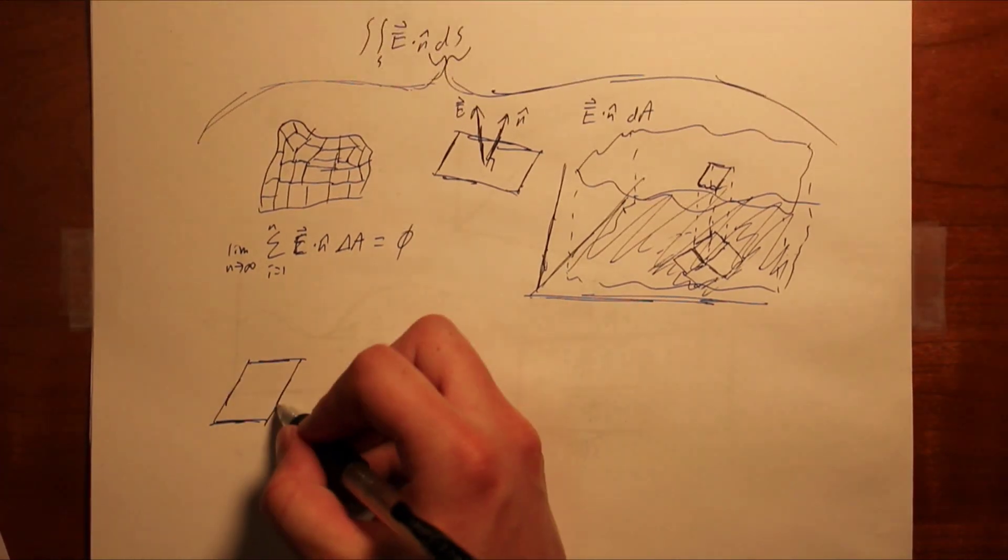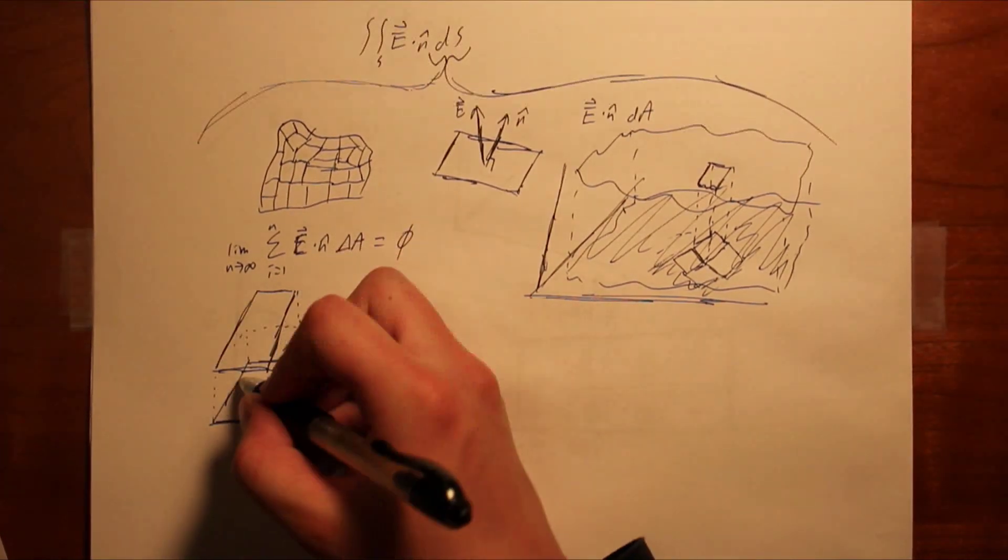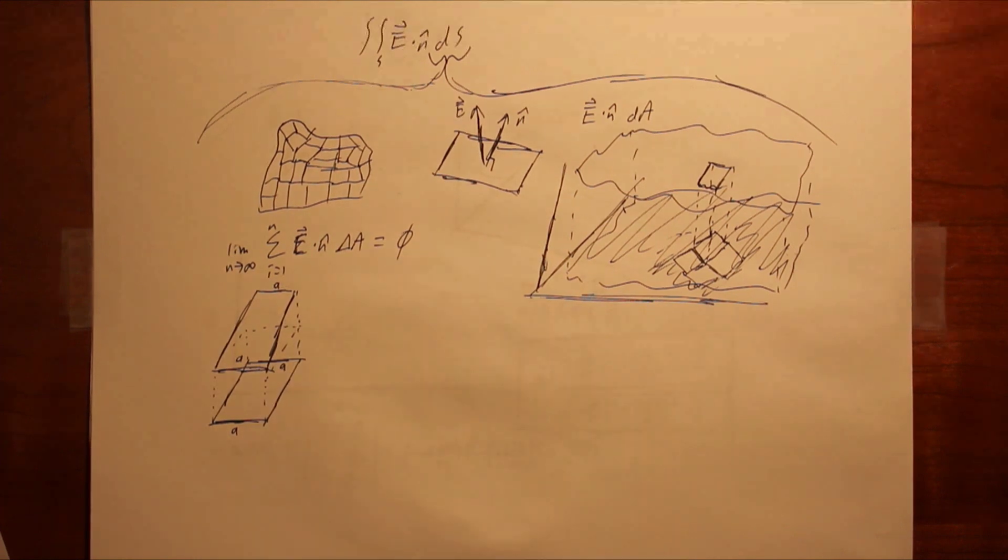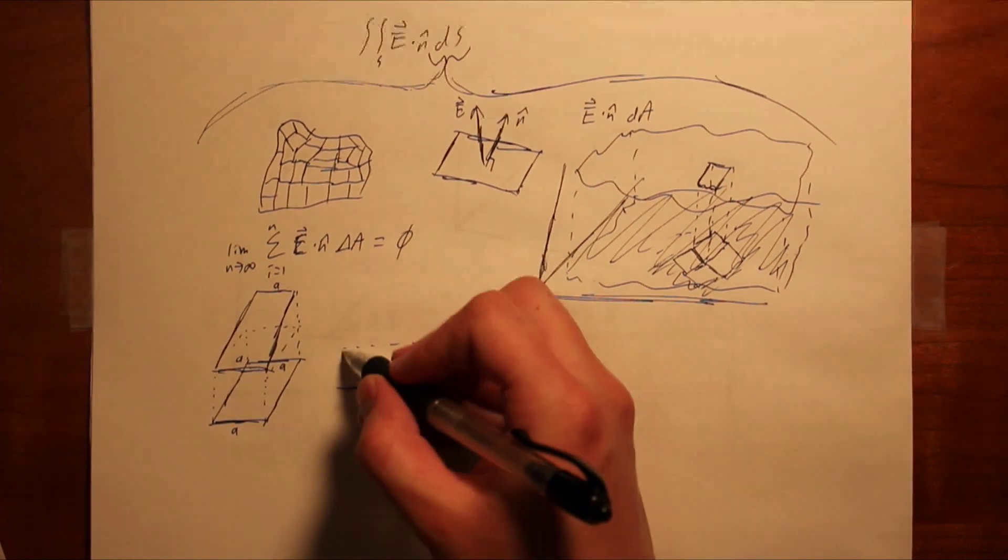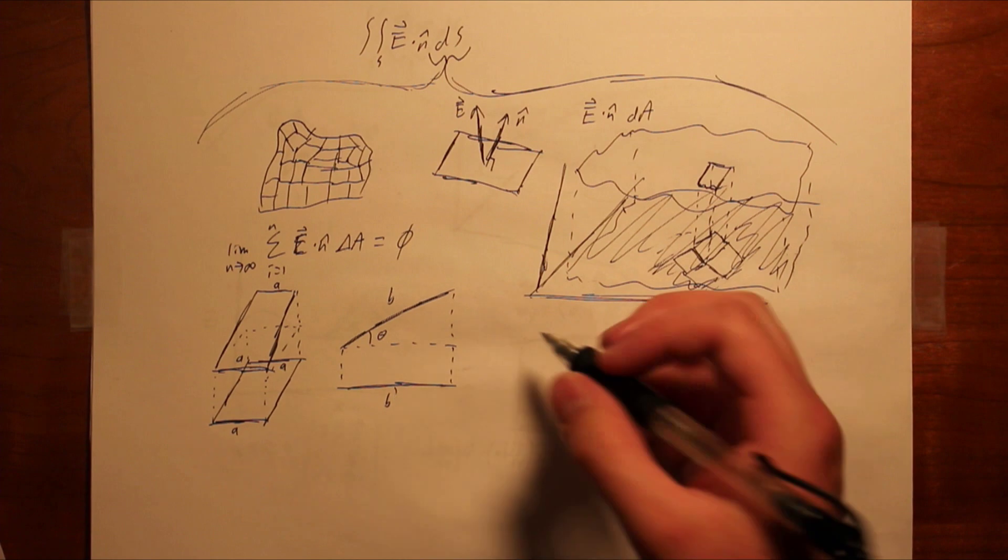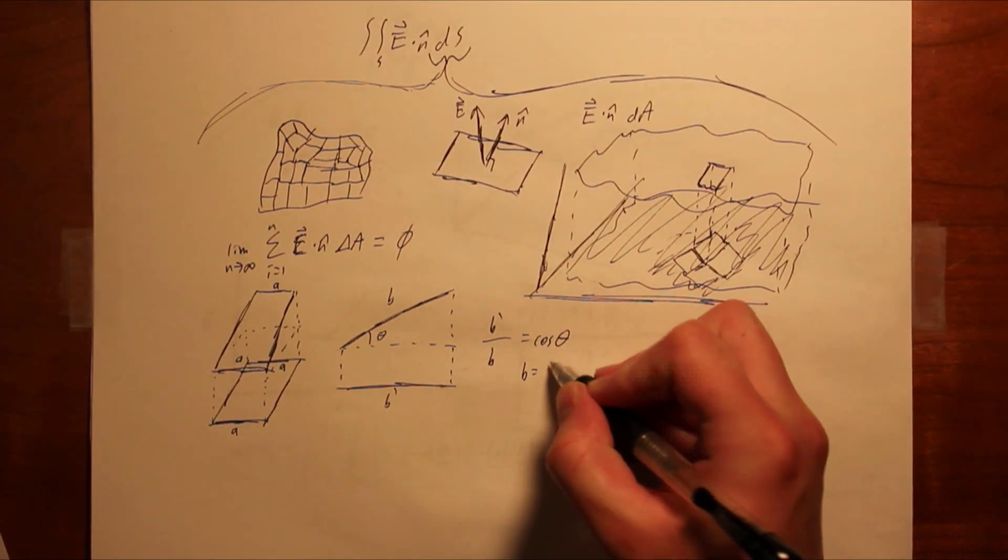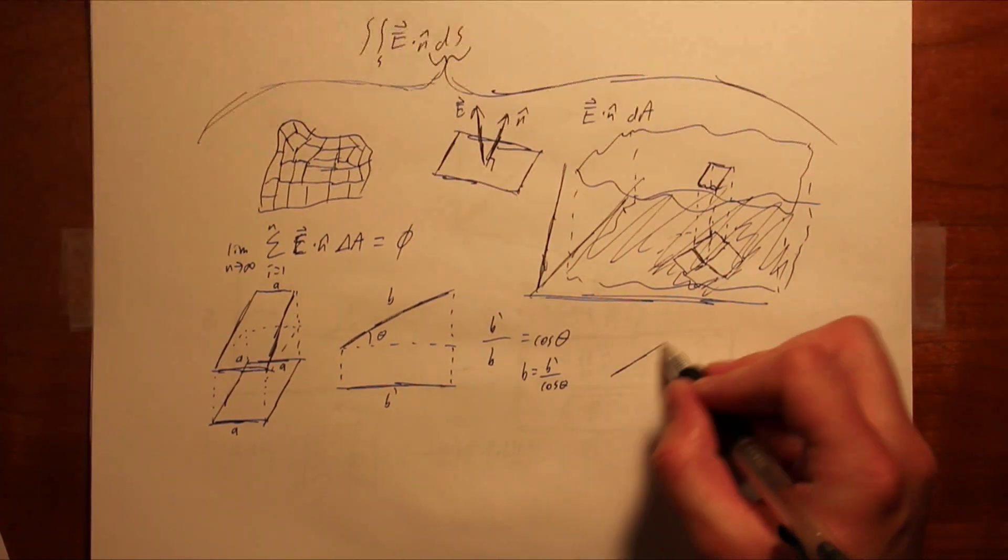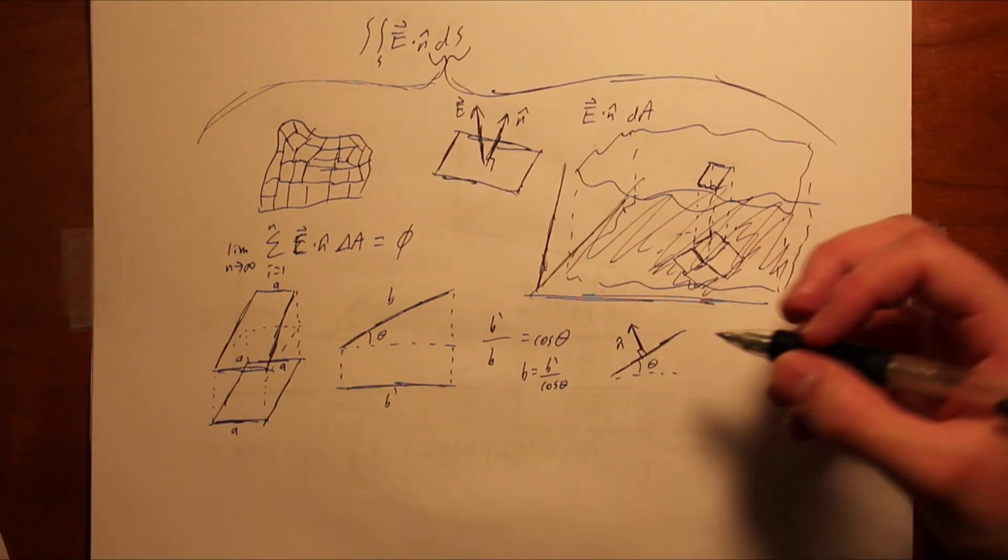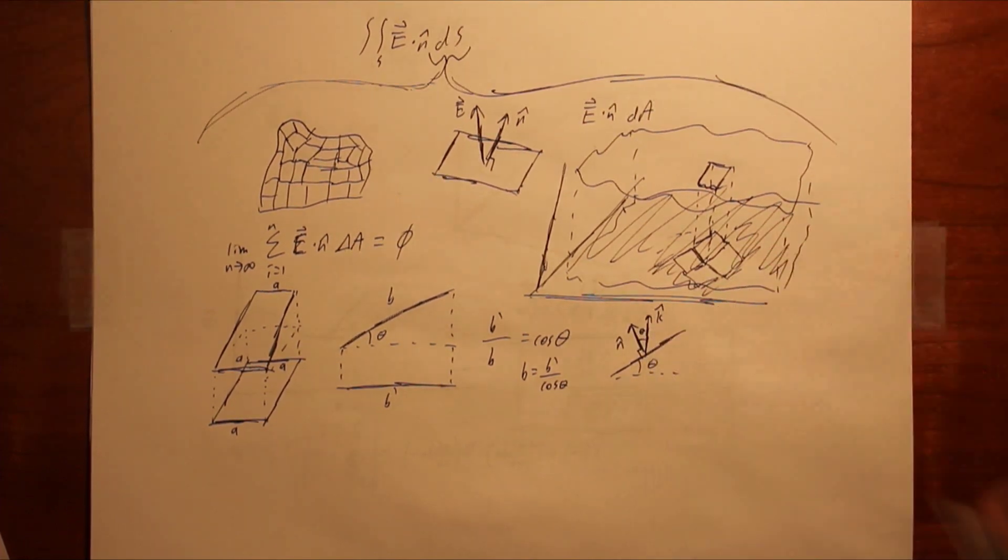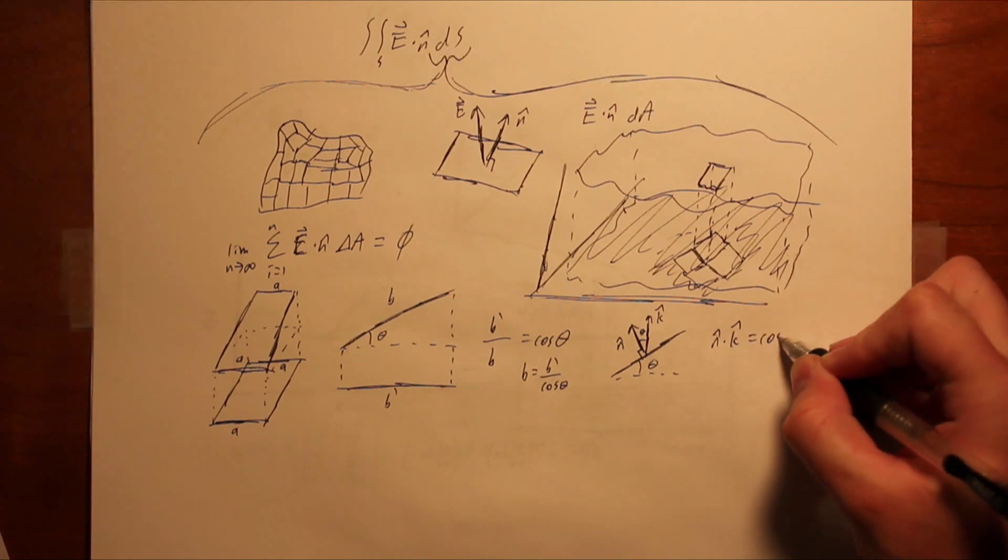Consider a rectangle of surface where two sides are parallel to the plane into which we will project. These sides will have the same length in the projection. The other sides are related via the cosine of the angle that the surface rectangle makes with the plane. This angle is the same angle that the normal of the surface makes with the vertical, and thus the cosine of theta can be found from the dot product of these two vectors, n hat and k hat.